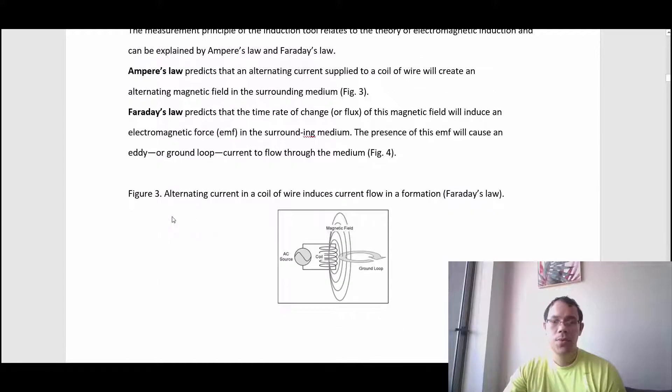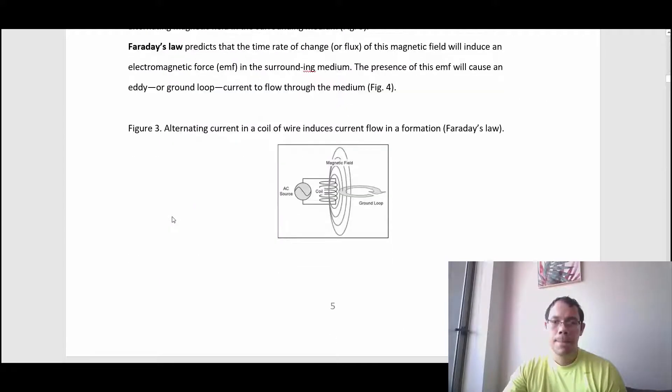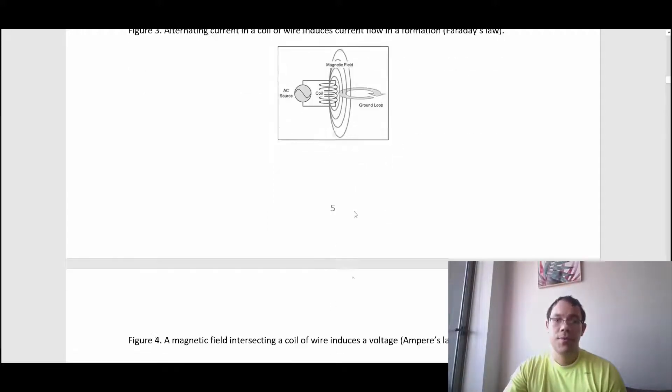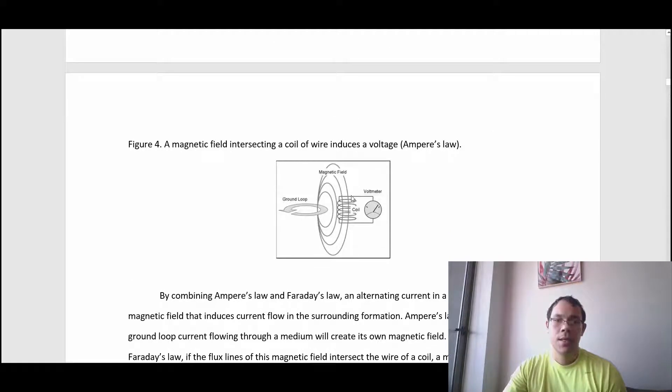The physics of measurement is theoretically based on Ampere's law and Faraday's law. Here's how it works: you apply AC current to a coil, which creates a magnetic field, and this is going to create a ground loop in the formation.